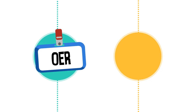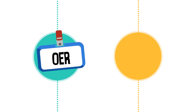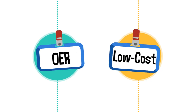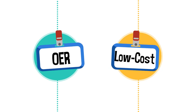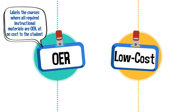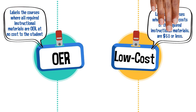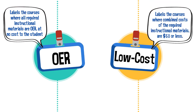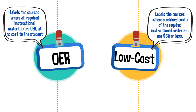Three statewide studies, including one student survey with 10,000 responses, produced two labeling policies. One identifies the courses where all required instructional materials are OER. The other identifies courses where the combined costs of the required instructional materials are $50 or less.